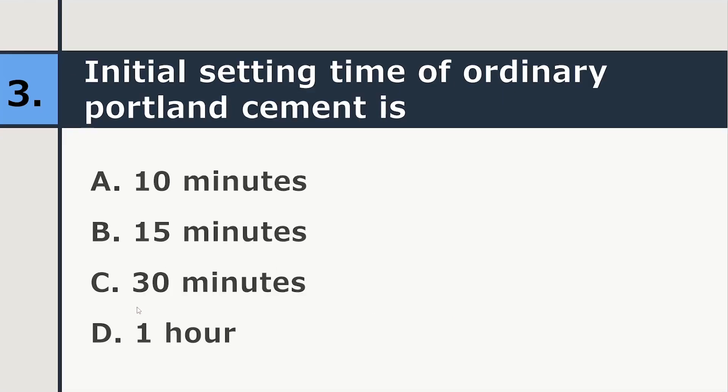Initial setting time of the ordinary Portland cement is 10 minutes, 15 minutes, 30 minutes or 1 hour. So correct answer is 30 minutes.